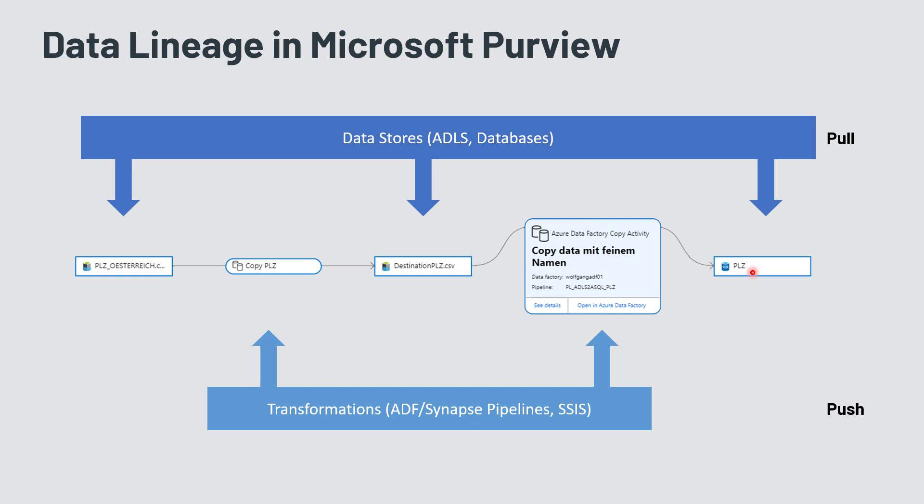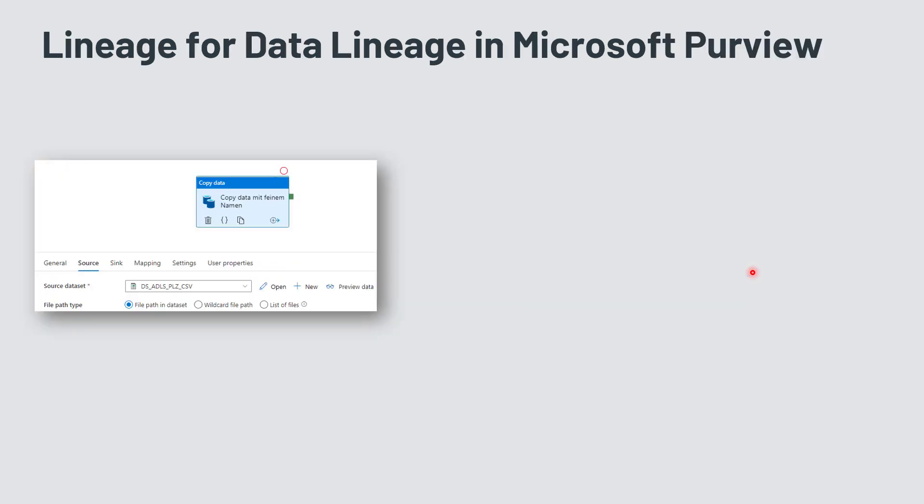As of today, Azure Data Factory pipelines, Synapse pipelines, or SSIS integration services packages are supported as data lineage processes that connect that information.